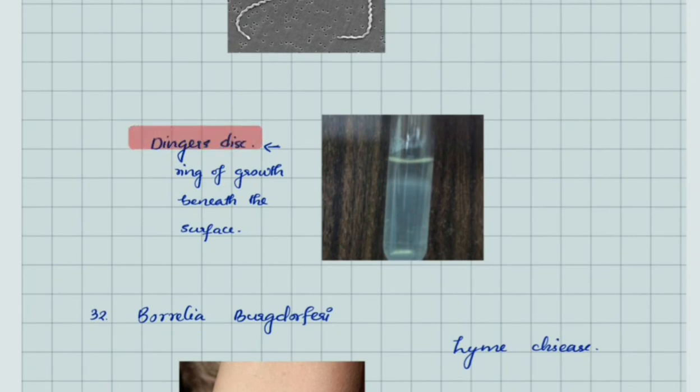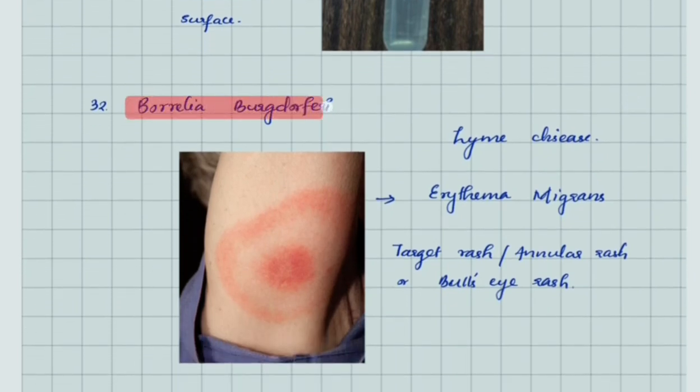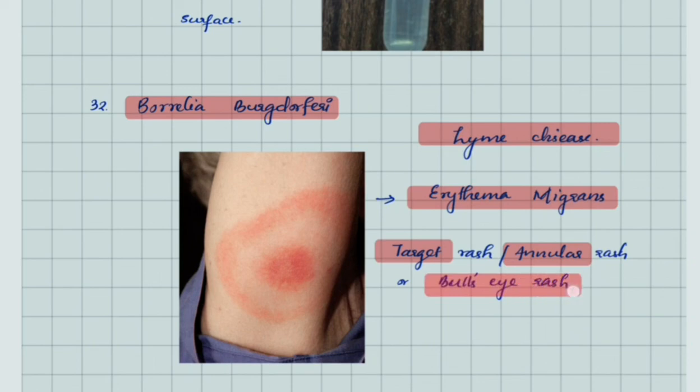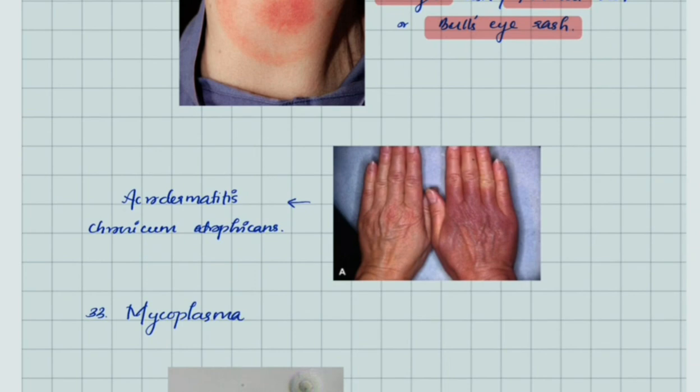This is the Dinger's disc—a ring of growth beneath the surface in liquid medium. Borrelia burgdorferi causes Lyme disease, which has characteristic erythema migrans—target-shaped or annular-shaped rash, also known as bull's eye rash, at the site of vector bite. Another clinical feature is acrodermatitis chronica atrophicans, showing typical grayish-purple discoloration of extremities.